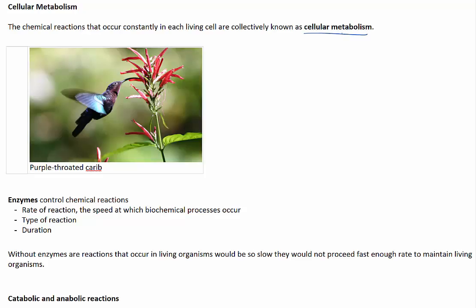The rate of a biochemical process is controlled by enzymes. The rate of cellular metabolism varies amongst organisms. For example, the purple-throated carib, which is a type of hummingbird, has a very high metabolism, which you might expect considering it uses so much energy to stay in flight and to move its wings so rapidly. The reactions in cellular metabolism do not occur randomly — they are all controlled and regulated by enzymes.